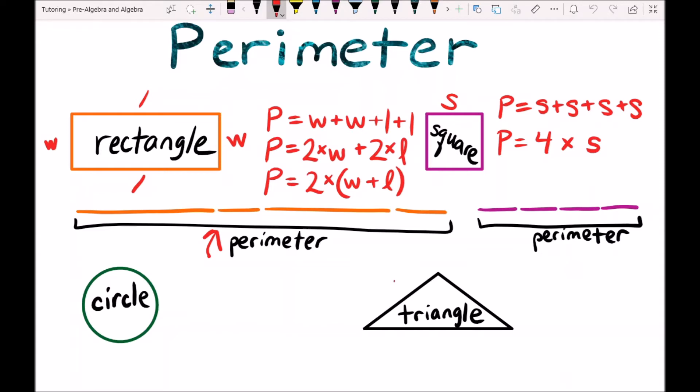So we'll call one side length A, one side length B, and one side length C. A and B could be the same, like in this case it looks like A and B are equal, or A, B, and C could all be different numbers. So P for a triangle is going to be A plus B plus C.